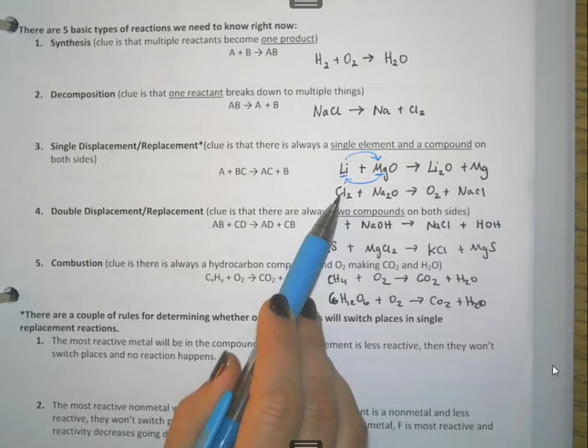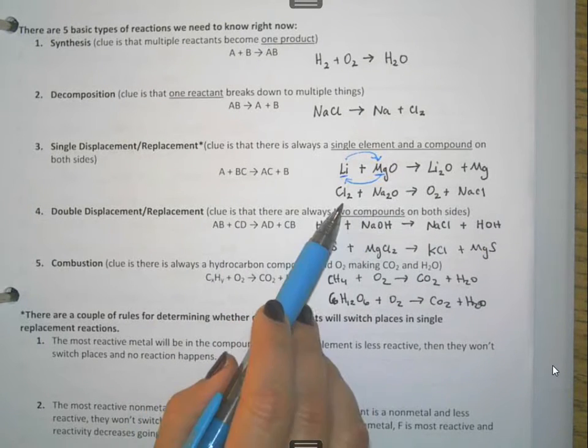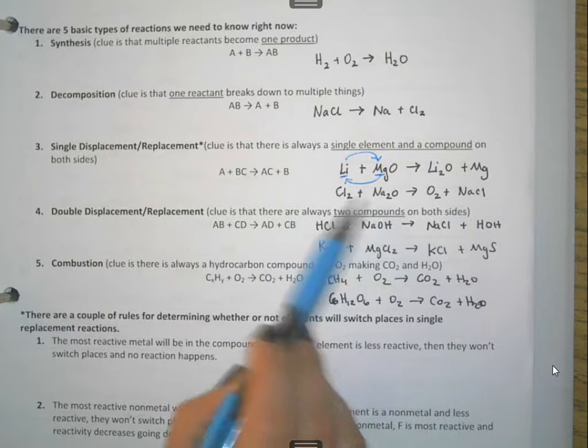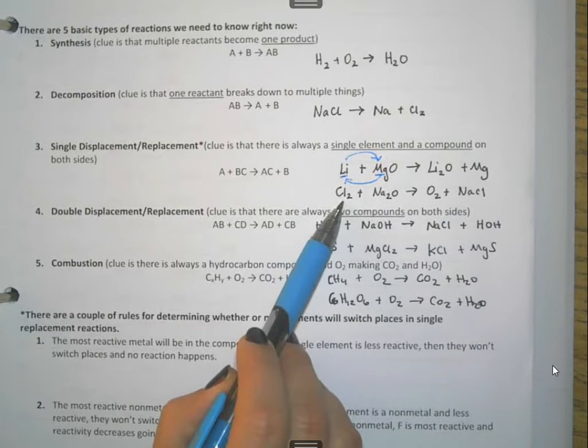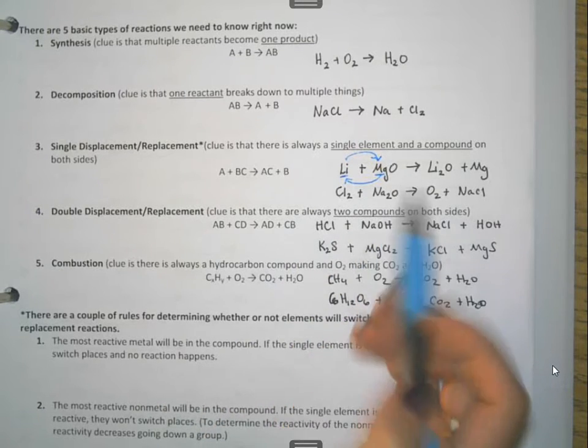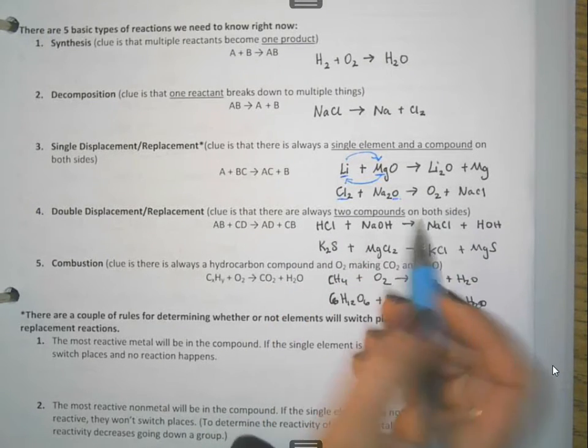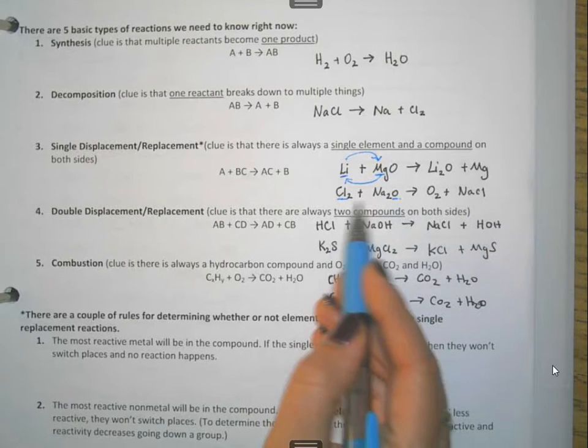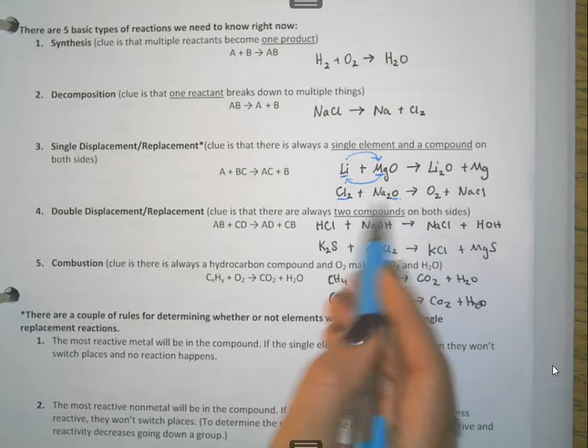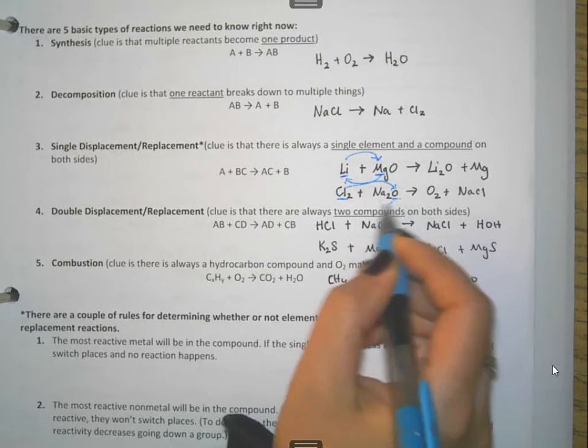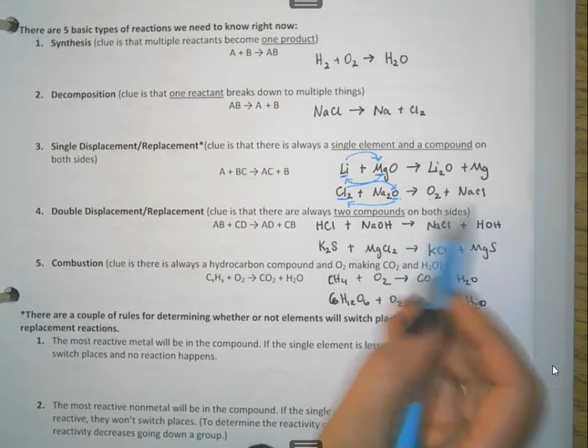Another way for single displacements or single replacements to happen is you can actually have two non-metals switching places. In this particular case, chlorine is by itself. Oxygen is in the compound. So I have to switch two of the same things. I can't switch chlorine out with sodium. I have to switch a non-metal with a non-metal. So chlorine went in and took oxygen's place, and oxygen came out to be by itself on this side.